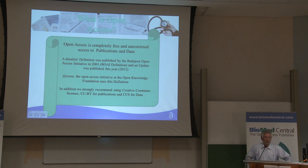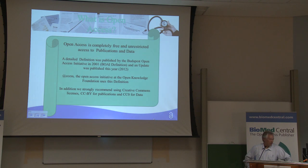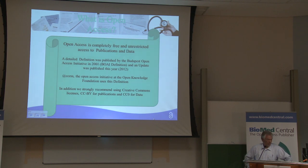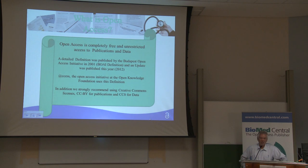The definition that I use, and that many people use, is the definition of the Budapest Convention. That one has been updated very recently this year. It talks about open access to journal articles and also to data. It's important to stress this point because there are many people who just pose any definition of open access, and I think we should stick to this definition. We strongly — and 'we' is the group I work for at the Open Knowledge Foundation's Open Access Initiative — recommend using Creative Commons licenses: CC BY for journal articles and CC0 for the data.